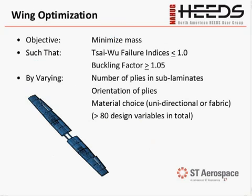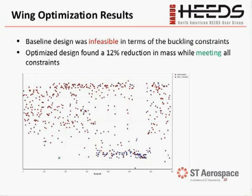The second component optimized was the wing. Again, the objective was to minimize mass with constraints on Tsai-Wu failure index and buckling factors, varying orientation, number of plies, and also allowing a material choice between unidirectional and fabric. For the wing, we had more than 80 design variables. Again, the baseline design was infeasible in terms of buckling constraints, and we were able to find a 12% reduction in mass while satisfying all constraints.